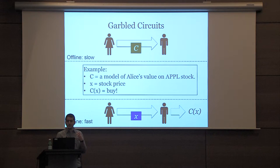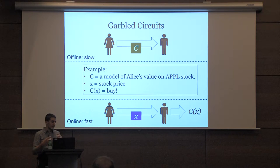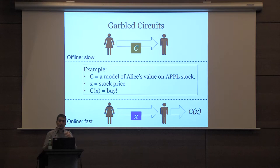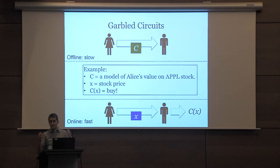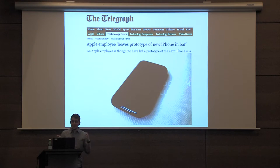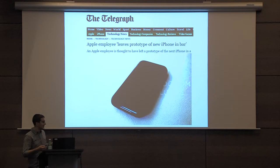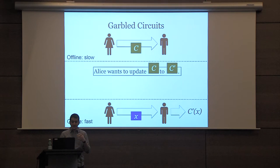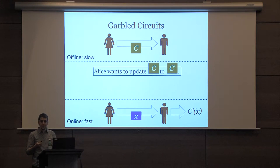For example, C might capture Alice's knowledge or beliefs about the value of Apple stock. Tonight, Alice is going to garble the circuit that captures this belief and send it over to Bob. Tomorrow morning, depending on x — like the stock price — C of x will be buy or sell. But maybe tonight Alice learns something about Apple that changes her valuation. She sees a really cool picture of an iPhone left at a bar, and now she wants to update her circuit — she updates her belief, making some small change from C to C prime.